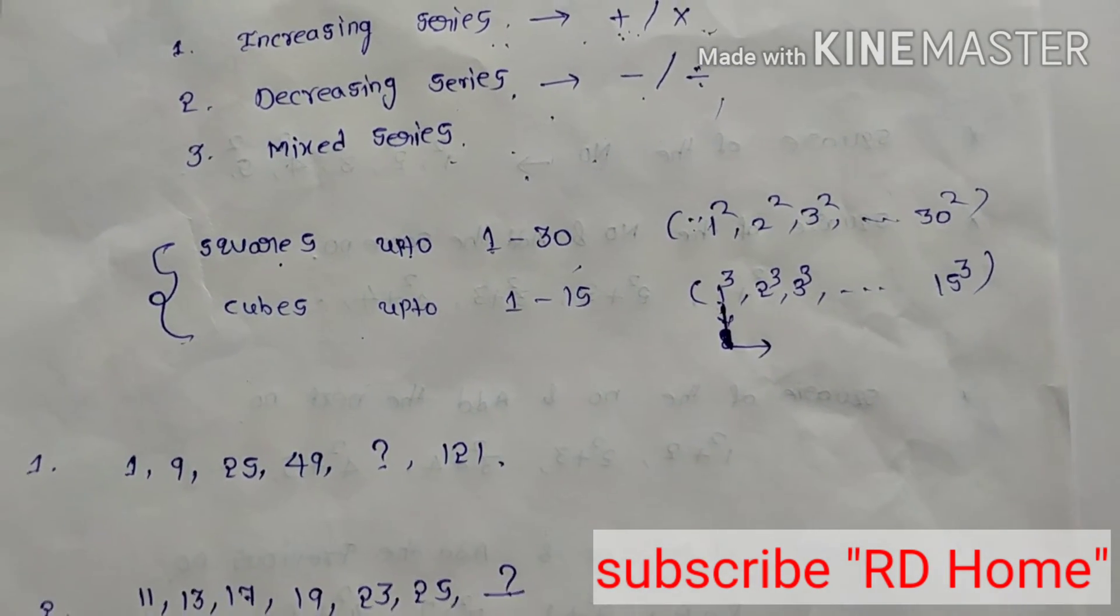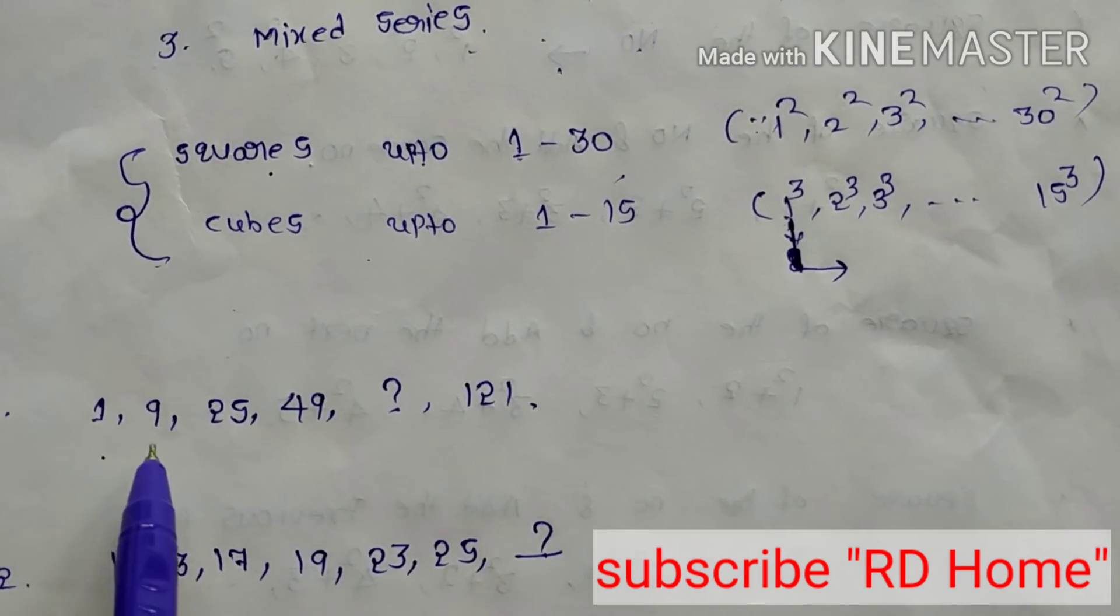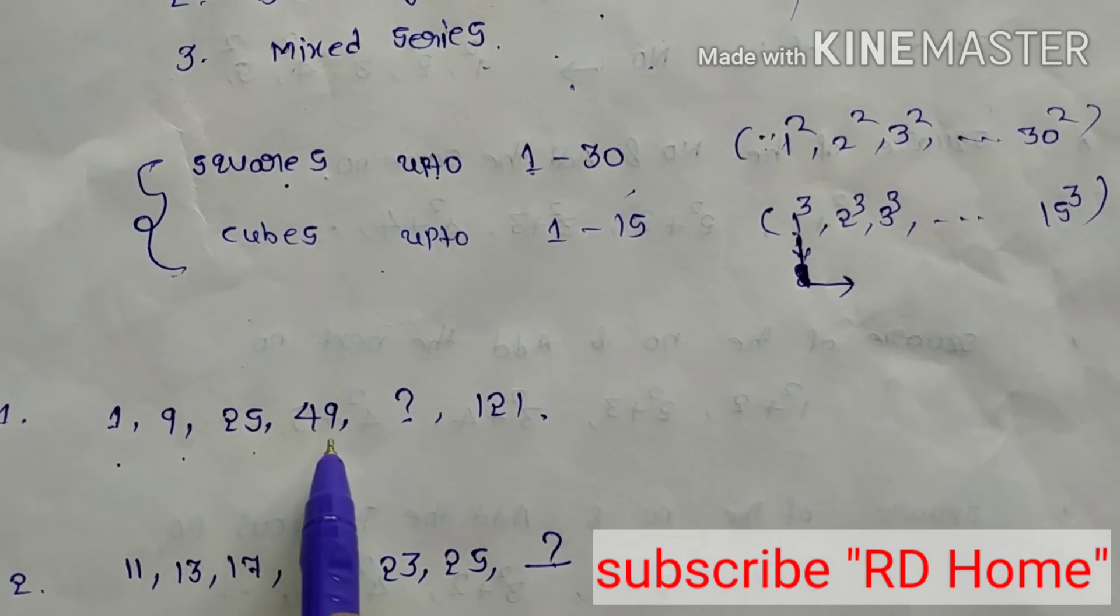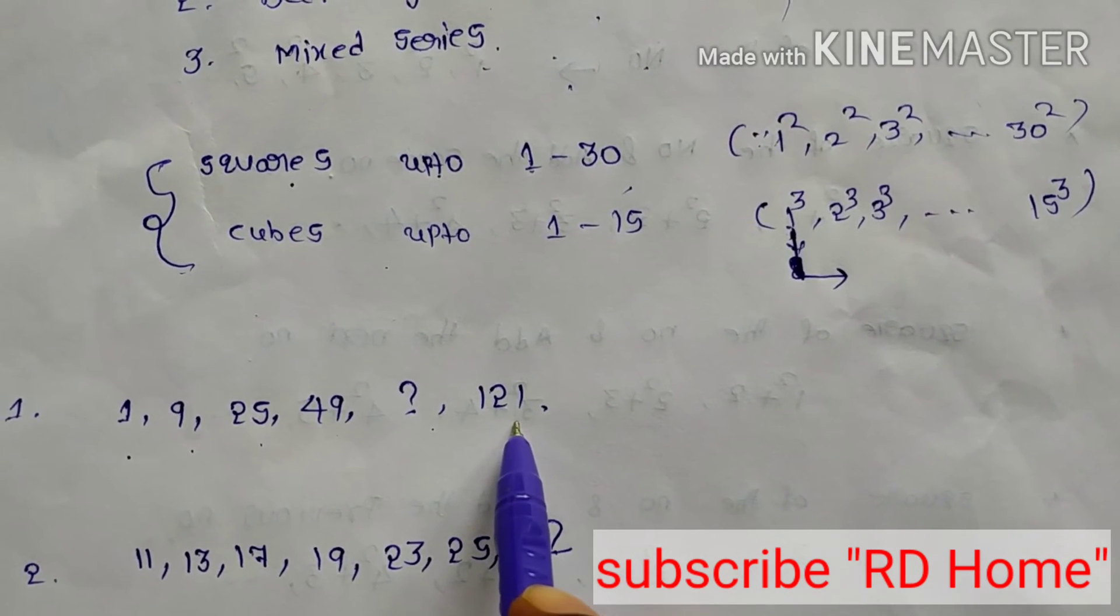Now you can see. I will explain some of the examples here. First one example I am taking here. 1, 9, 25, 49, question mark, next 121.